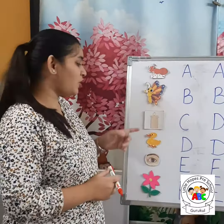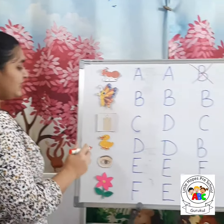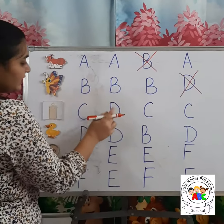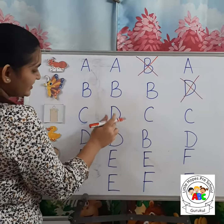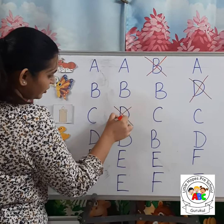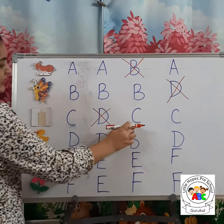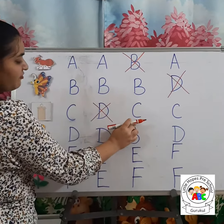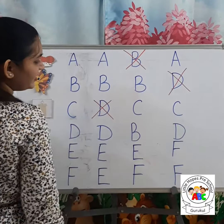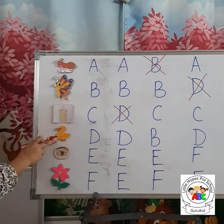The third picture is of Candle. So let's start — C for Candle. This is not C, this is letter D. So I am putting a cross. This is C for Candle.